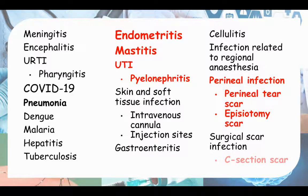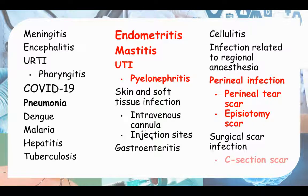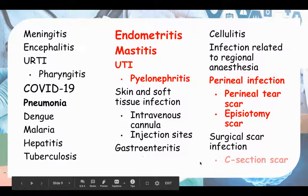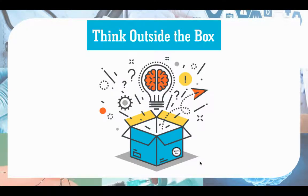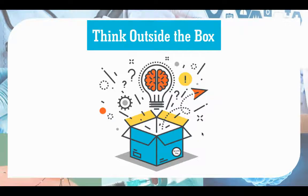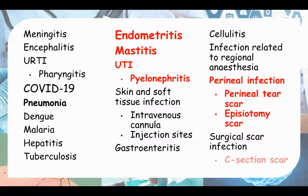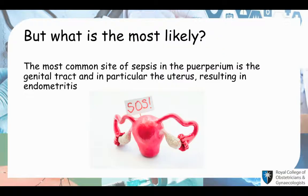The ones in red are the Obs and Gynae related ones, but don't forget the ones in black — pregnant women can get all these too. Dengue, malaria, soft tissue infection from intravenous lines, gastroenteritis. The moral of the story is to think outside the box. Pregnant women are human beings too, so they can get the other infections that normal human beings get. Don't just limit your differentials to Obs and Gynae. However, there are so many differentials, so we need to narrow down. The most likely is endometritis.